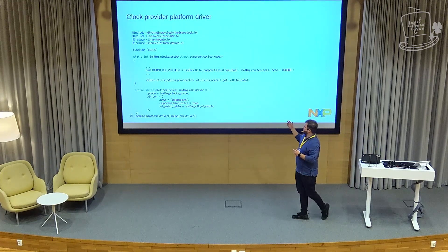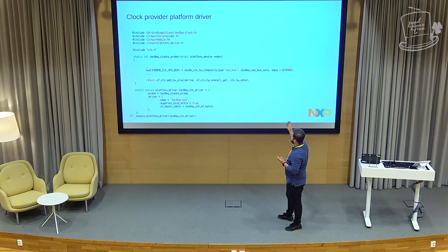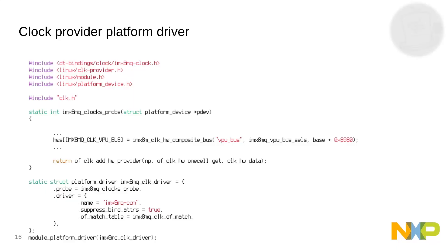This is a stripped-down clock driver showing exactly how we register clocks. Basically, we're registering the VPU bus, which is used by the VPU NOC. This is the IMX way of doing things. You have an ID which uses one cell, a translate function to get the clock from the device — you specify the handle to the provider and the ID of the clock you want. We're adding the provider with all the clocks. There are hundreds of clocks in the real driver.